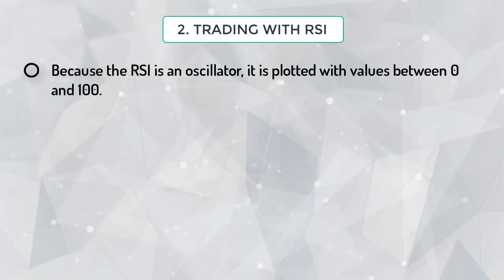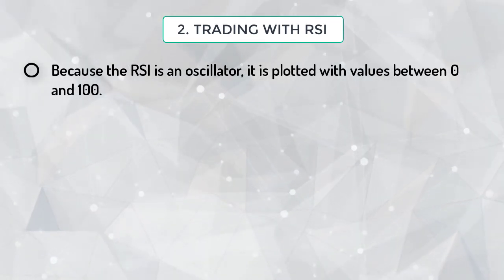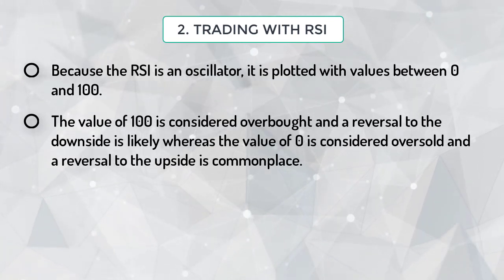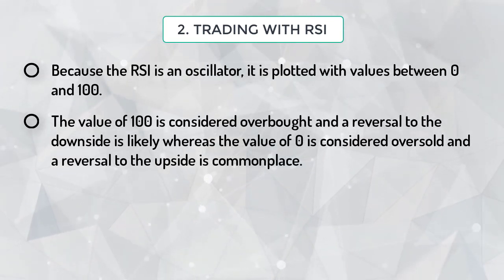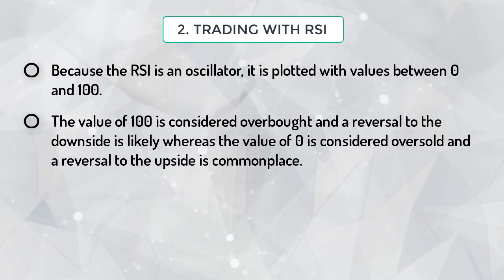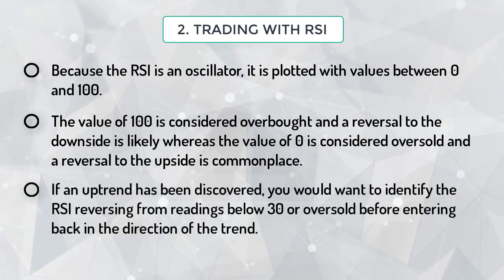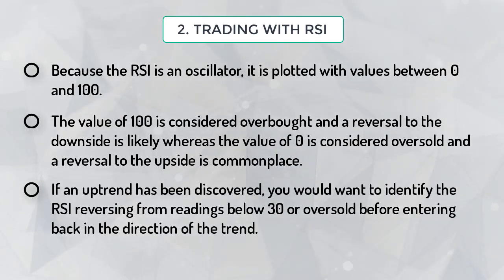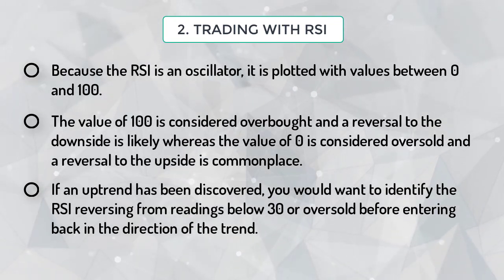Because the RSI is an oscillator, it is plotted with values between 0 and 100. A value of 100 is considered overbought and a reversal to the downside is likely, whereas a value of 0 is considered oversold and a reversal to the upside is commonplace. If an uptrend has been discovered, you would want to identify the RSI reversing from readings below 30, or oversold, before entering back in the direction of the trend.